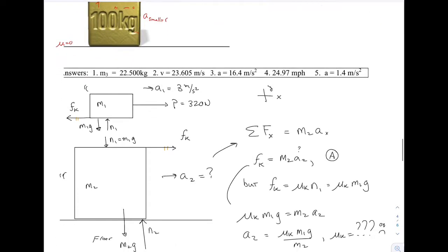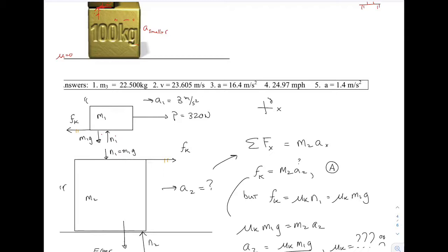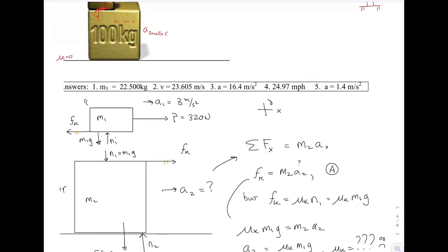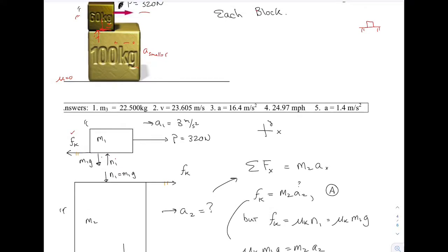Here is my pulling force P. There's the normal force N1 and the weight of number one. The pulling force is pulling M1 to the right. There's friction between the two: the bottom box is trying to prevent the top one from moving, or you can say the top one is trying to drag the bottom one to the right. By Newton's third law, the bottom one exerts an equal and opposite force to prevent the top one from moving — that's why my kinetic friction force on M1 points backward. Imagine the 100 kg one is just the floor: you're dragging M1 across the floor and you have that resistive kinetic friction force.